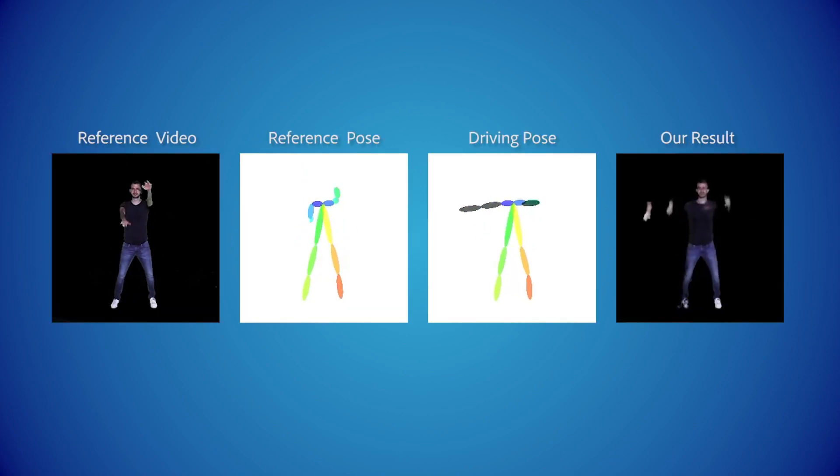We now discuss the limitations of our model. Our network is not able to generate patches that do not exist in the reference video, but only to recombine existing ones in a natural manner. We train the network using a reference video that only shows vertical motions of arms going up and down one at a time.